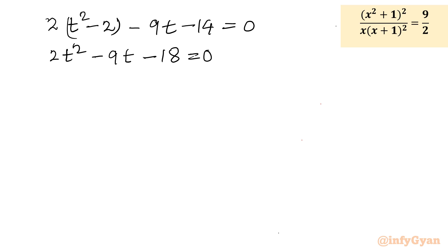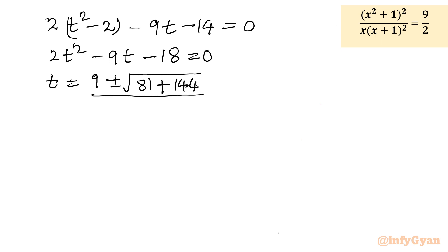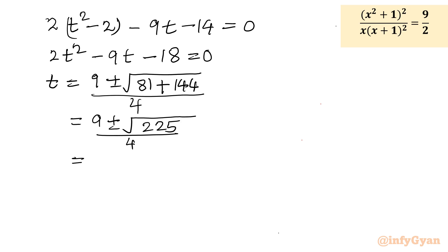Solving this quadratic using the quadratic formula: t equals minus b, so 9 plus or minus square root of b² minus 4ac, which is 81 plus 144, giving 225, all divided by 4. The square root of 225 is 15, so t equals (9 + 15)/4 = 6, or t equals (9 - 15)/4 = -3/2.